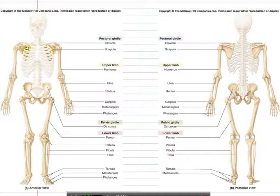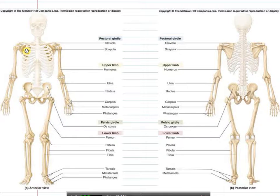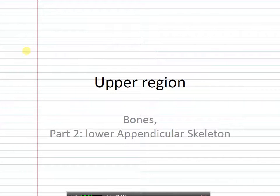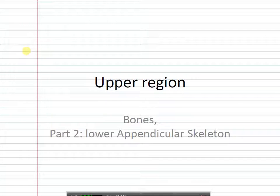The appendicular skeleton refers to the appendages — the arms and the legs. The two girdles are the attachment points: you have the pelvic girdle which is the hip, and the pectoral girdle which is the shoulder. When you look at the arms and legs, one thing you notice is the difference in size — legs are going to be more dense because they bear a lot more weight, while the arms need to be flexible to move around, be mobile, and pick things up.